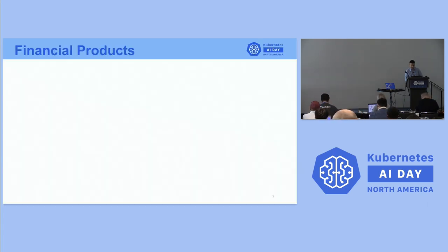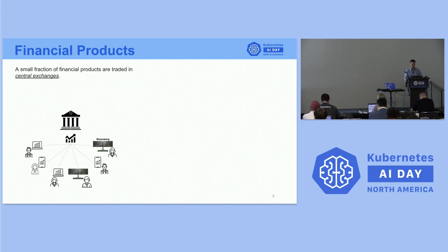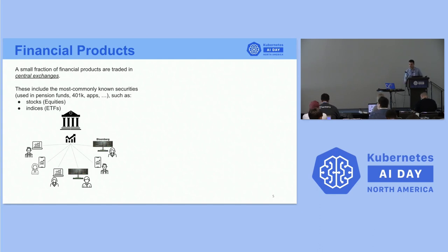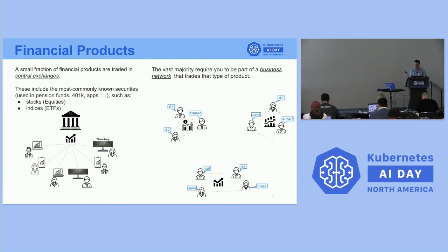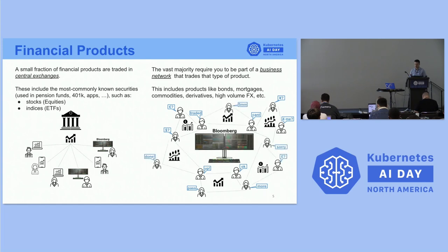Over-the-counter trading: if you look at stocks or the normal securities and products that are famous among people not into finance, they are normally traded in central exchanges — pension funds, things you can trade in your apps. There's a central regulated exchange like NASDAQ where people can trade and see a single price. However, a vast majority of financial products are actually traded over-the-counter in decentralized business networks. People that trade FX, commodities, and mortgages all have their own kind of social network where they talk to each other.